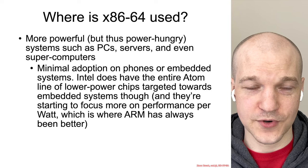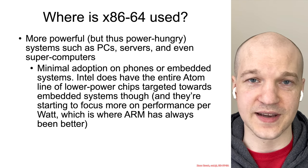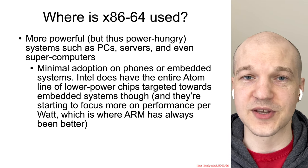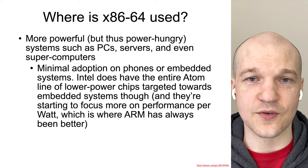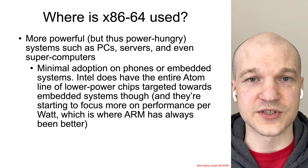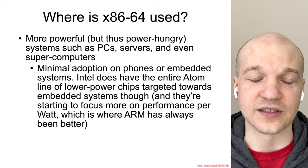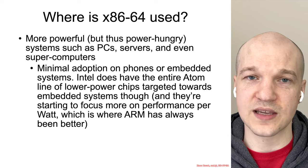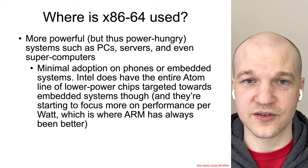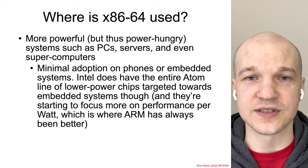So where is x86-64 used? More likely than not, you're probably using an x86 system right now to watch this video on. Most desktop systems are still x86, although ARM is starting to make some inroads, and server systems, supercomputers, and more are also using x86-64. The Intel architecture was generally optimized for maximum performance as opposed to lower power utilization. While Intel did try to make inroads into lower power places with chips like Atom, they really haven't gotten too much uptake there, so you'll mostly see x86-64 on desktops, servers, and supercomputer-type systems.